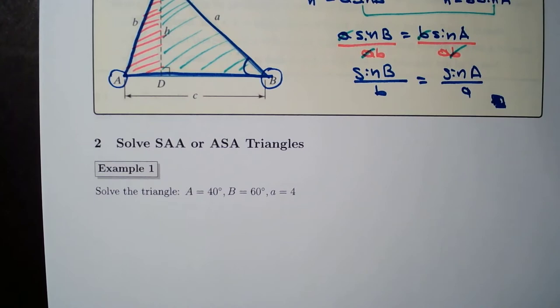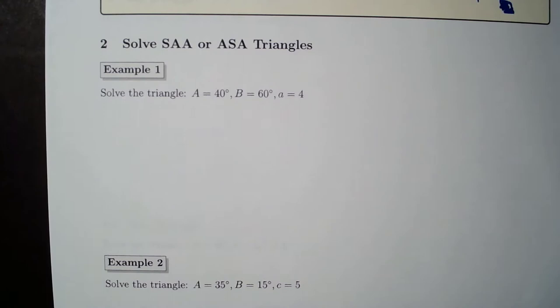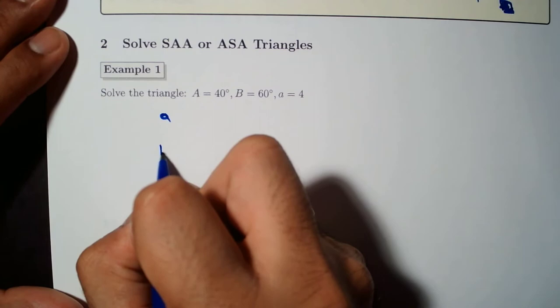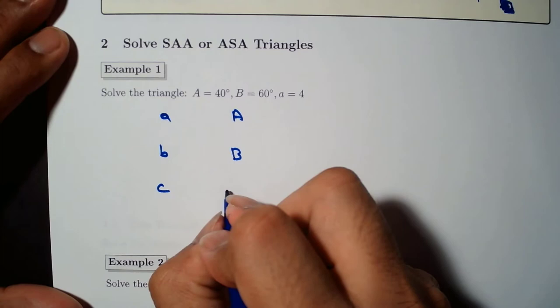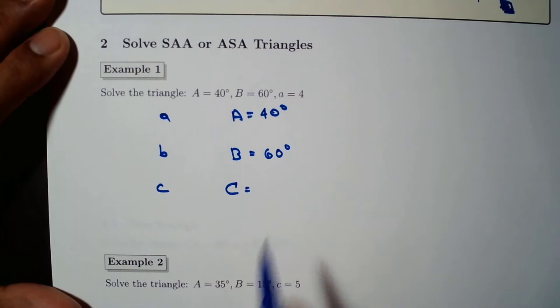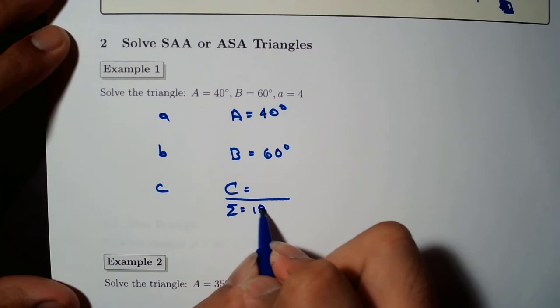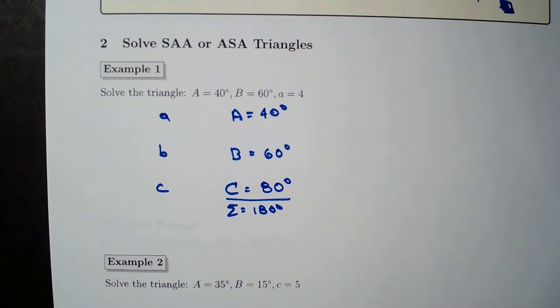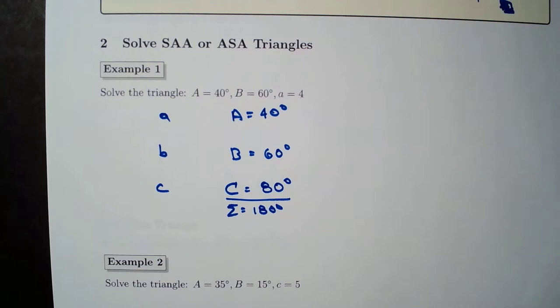Let's solve the triangle: A equals 40 degrees, B equals 60 degrees, and side a equals 4 units. First, let's make a list of angles A, B, and C and sides a, b, c. We're given 40 degrees and 60 degrees — these have to add up to 180 degrees, so C equals 80 degrees. If you look at all the angles, they are all acute angles, so our triangle looks like a standard acute triangle.